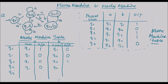Q4 is going to q3 with input a. Q4 with input b is going to state q2, and q2 has an output of 1. This is how we convert the Moore machine to a Mealy machine.